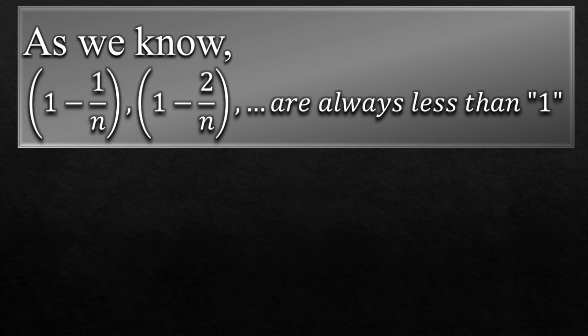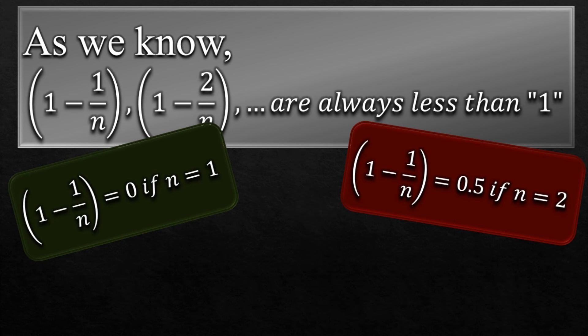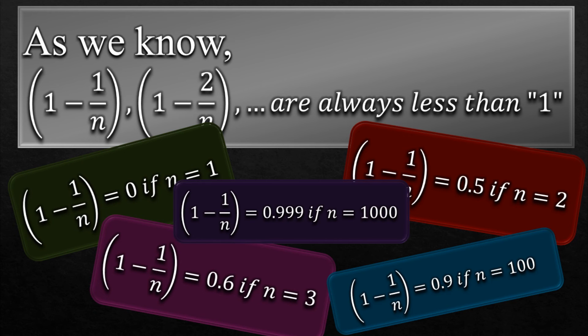As we have seen, Tn contains terms like (1 - 1/n), (1 - 2/n) and so on. So these terms are always, always less than 1 because we are subtracting something from 1 even if it is a very small amount. So (1 - 1/n) is 0 if n is 1, it is 0.5 if n is 2, and you can see the value of (1 - 1/n) increases as n increases but never gets equal to 1.